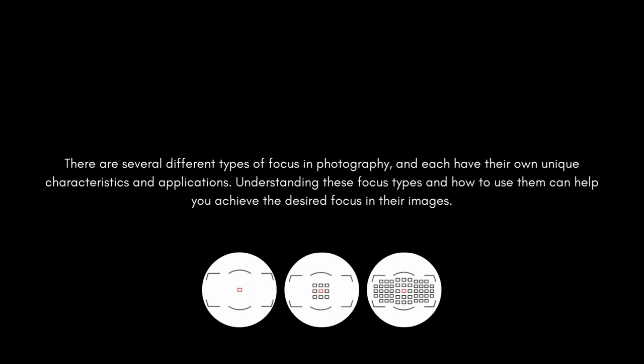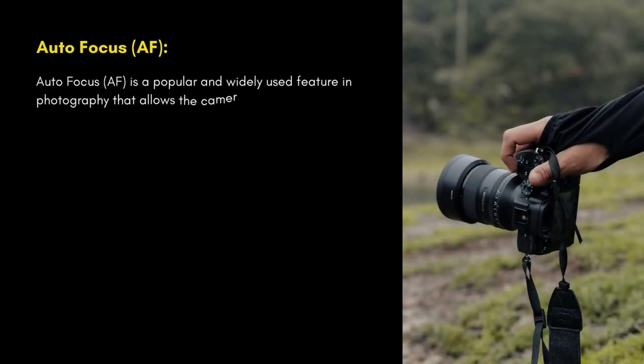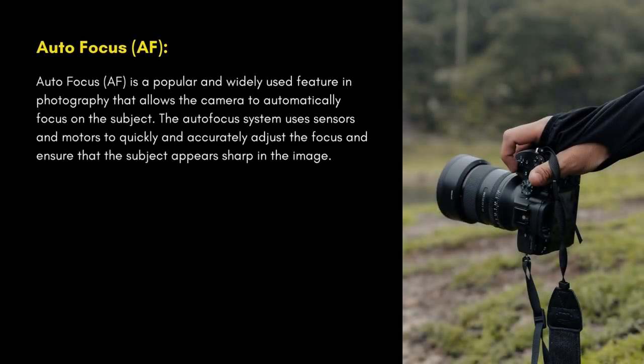Understanding these focus types and how to use them can help you achieve the desired focus in your images. Autofocus is a popular and widely used feature in photography that allows the camera to automatically focus on the subject. The autofocus system uses sensors and motors to quickly and accurately adjust the focus and ensure that the subject appears sharp in the image.